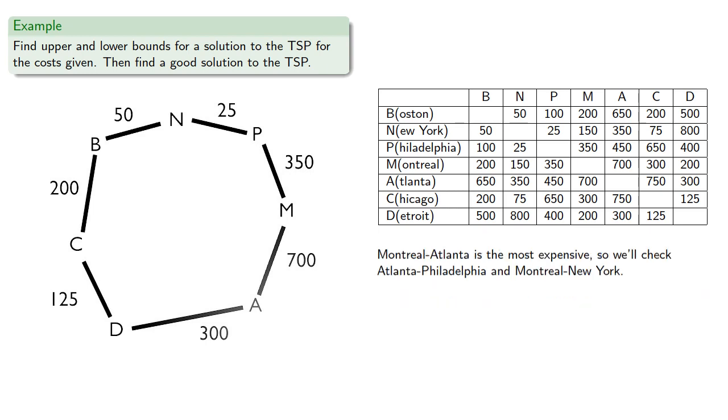Montreal-Atlanta is now the most expensive, so we'll check Atlanta-Philadelphia and Montreal-New York, which would replace cost 725 with cost 600, so we should do it.